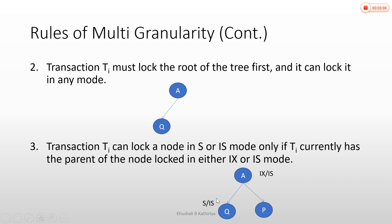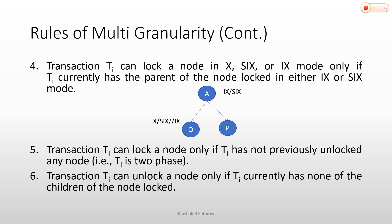The fourth rule: transaction TI can lock a node in X, IX, or SIX mode only if TI has the parent node locked in either IX or SIX mode. Suppose the child node has X — meaning exclusive. The parent node should have SIX or intention exclusive. If intention exclusive, then the child is exclusive. If SIX, then it is shared. SIX means shared intention exclusive, so the child lock becomes shared.